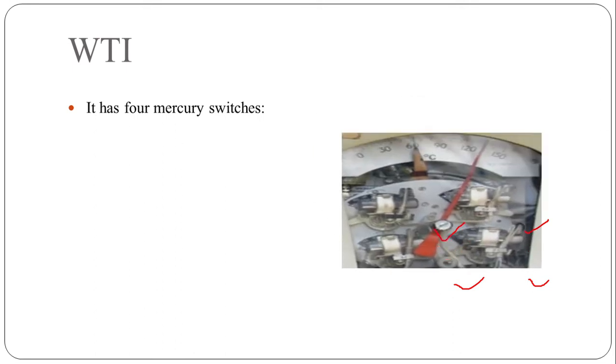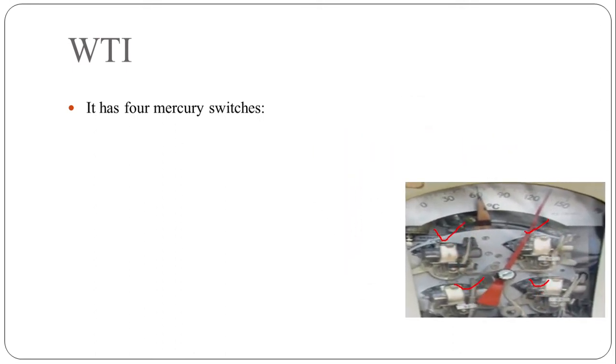Now we will see about the winding temperature indicator. It has four mercury switches. See this is winding temperature indicator. Here you can see these four mercury switches. All these four mercury switches operate for specific value of temperature.